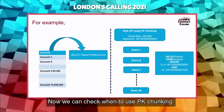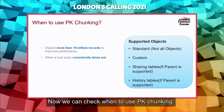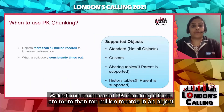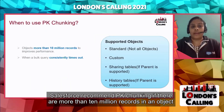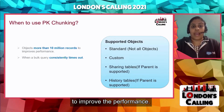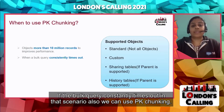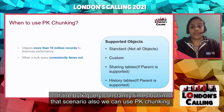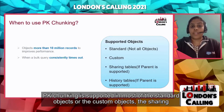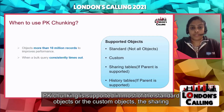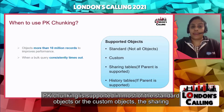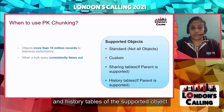Salesforce recommends enabling PK chunking if there are more than 10 million records in an object to improve performance, and also if the bulk query constantly times out. PK chunking is supported for most standard objects, all custom objects, and the sharing and history tables of supported objects.